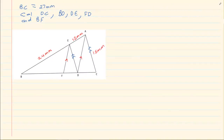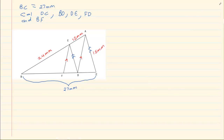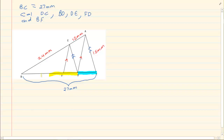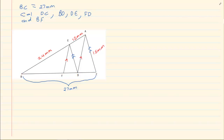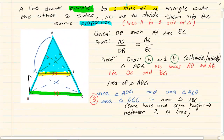Now let us look at the following rider. It says that BC is equal to 27 mm, so what they are telling us is that the entire length is 27 mm. They want you to calculate DC and they want you to calculate BD. If you look at the entire triangle, you would notice two parallel lines. Let us take the first set of parallel lines — AC and EF. Now the theorem states that if a line is parallel to one side of the triangle, it will cut the other two sides in the same proportion.